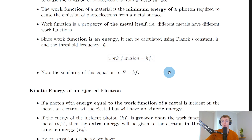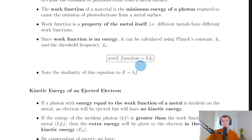So if you're asked to calculate the work function in a question and you know the threshold frequency f0, you can simply multiply the threshold frequency by Planck's constant to find the work function. Or if you're given the work function and asked to calculate the threshold frequency f0, you simply plug in your numbers and divide by Planck's constant to get f0 on its own.